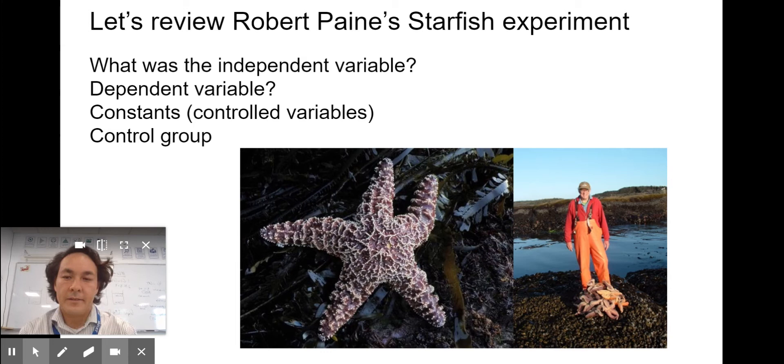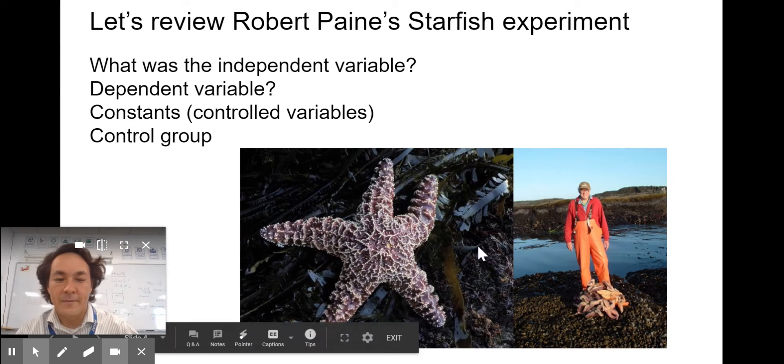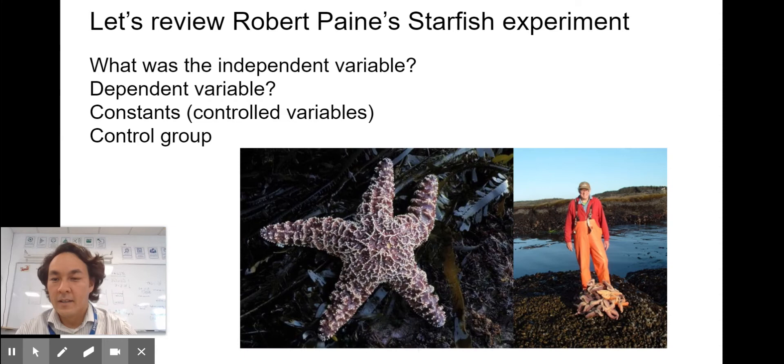Let's review Robert Paine's starfish experiment. What was the independent variable? What was the dependent variable? What were some things that were controlled or constant? What was the control group? Pause the video and see if you can remember. The independent variable was the removal of the starfish. The dependent variable was what happened to the biodiversity in those tidal pools.